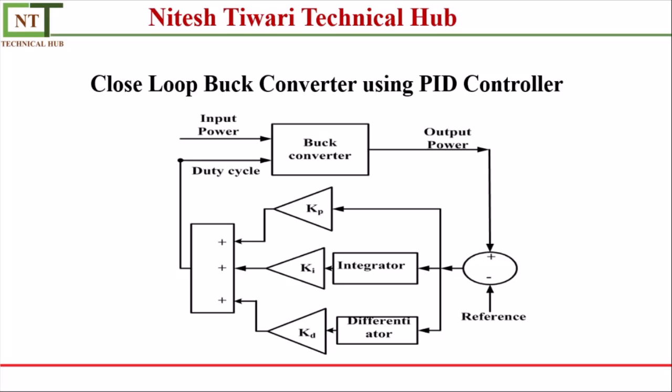So this is the basic block diagram of closed loop converter using PID controller. So this is the Buck converter what we have discussed earlier and this is the PID controller. So what we have to do, we just take output value as your feedback signal and compare this feedback signal to the reference value what we want. And error of these signals goes into this PID controller and the output of this PID controller is feeding as the input gate pulse of the MOSFET.